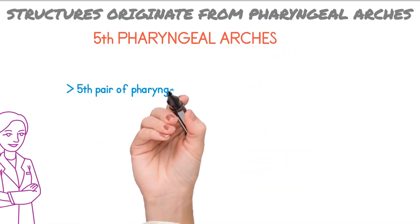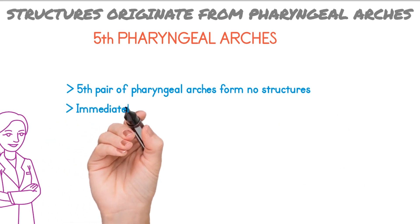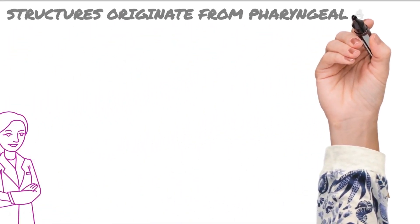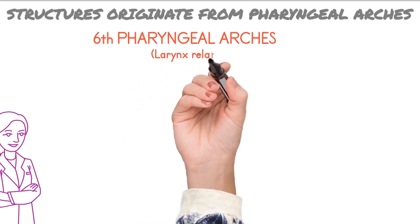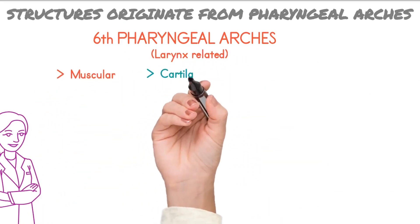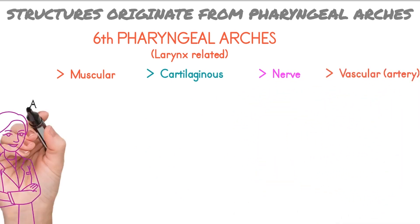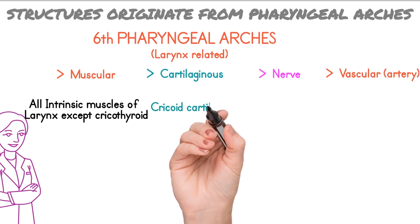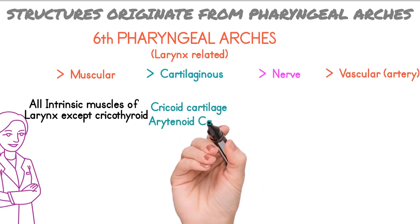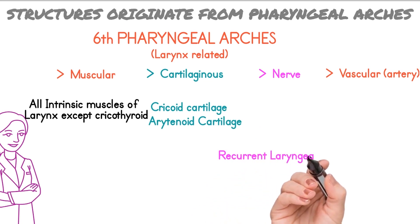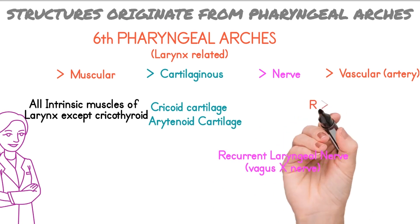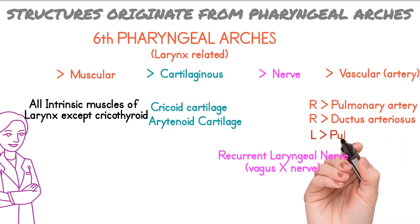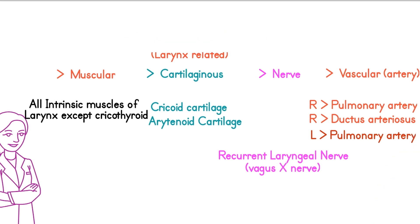The fifth pair of pharyngeal arches does not form any structure of the oral cavity and immediately went into recession after birth, becoming a rudimentary arch. The structures formed from the sixth pharyngeal arch are basically larynx-related. The muscular component forms all intrinsic muscles of the larynx except cricothyroid. The cartilaginous component forms the cricoid and arytenoid cartilages. The nerve is the recurrent laryngeal nerve, a branch of the tenth cranial nerve, the vagus nerve. Arterial supply to the right side is from the pulmonary artery and ductus arteriosus; arterial supply to the left side is from the pulmonary artery only.